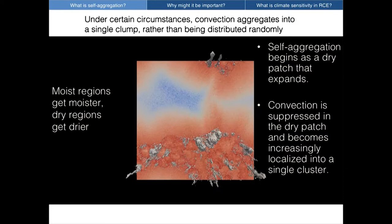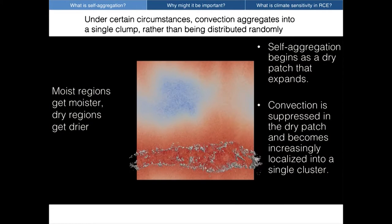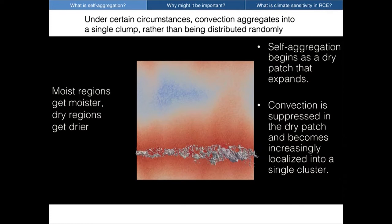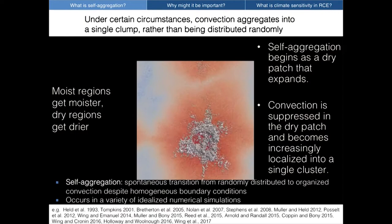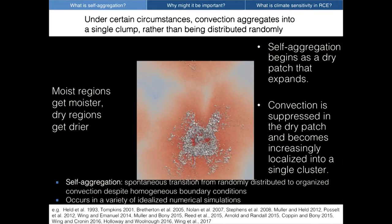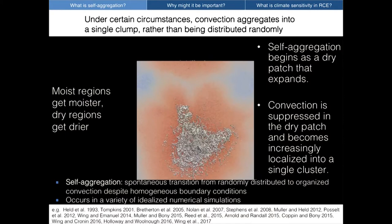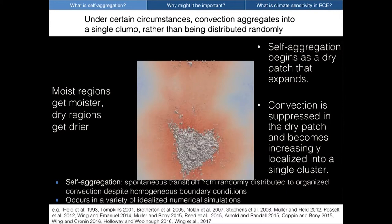This is a really dramatic transition, and it was fascinating when people first saw this phenomenon emerge in numerical modeling. As this transition occurred, the dry region became drier while the moist regions became moister — a transfer of energy between the two. This is what I call self-aggregation: the spontaneous transition from randomly distributed to organized convection despite homogeneous boundary conditions. It has been found to occur in a variety of different idealized numerical simulations, from cloud-resolving models in different geometries to models with parameterized convection, and the work on it has really exploded in recent years.